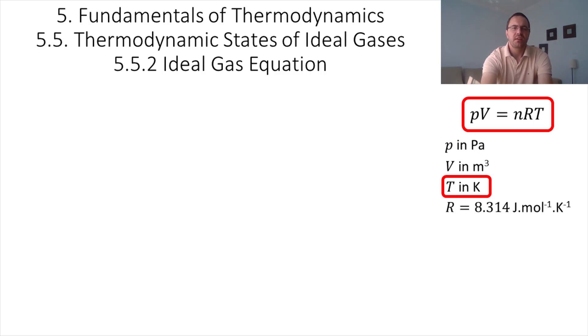R is the gas constant, R is equal to 8.314 joules per mole per Kelvin, and n is the number of moles.